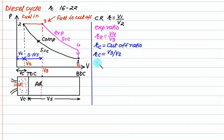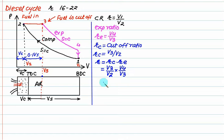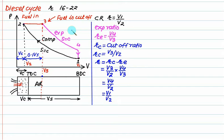We can prove that r equals rc times re. Here rc is v3 by v2 and re is v4 by v3, leaving v4 by v2. Observing that v4 is the same as v1, this relation holds good. Normally the expansion ratio is not provided directly — you are given the compression ratio and cutoff ratio, and from the cutoff ratio you calculate rc first.